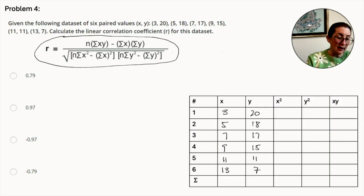Now x squared. 3 squared is 9. 5 squared is 25. 7 squared is 49. 9 squared is 81. 11 squared is 121. And 13 squared is 169. Now on to y squared. 20 squared is 400. 18 squared is 324. 17 squared is 289. 15 squared is 225. 11 squared is 121. And 7 squared is 49.